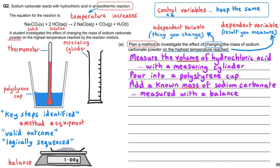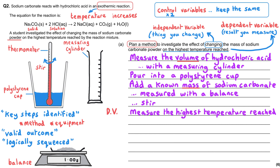Once you've added the sodium carbonate to the acid, stir the mixture with the thermometer you'll use to measure the temperature. The next step is to measure the highest temperature reached with that thermometer. You could also measure the starting temperature, but the question commands you to find the highest temperature reached — not the temperature change.